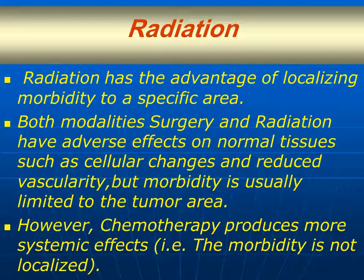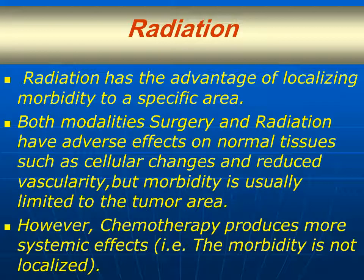Radiation has the advantage of localizing morbidity to a specific area. However, both modalities — surgery and radiation — have adverse effects on normal tissues, such as cellular changes and reduced vascularity, but morbidity is usually limited to the tumor area. However, chemotherapy produces more systemic effects; that is to say, the morbidity is not localized.